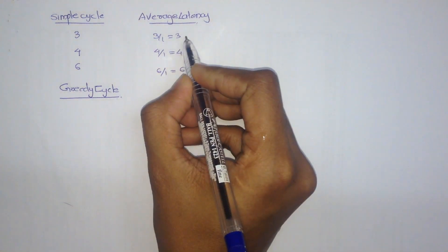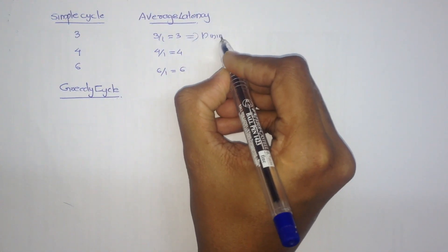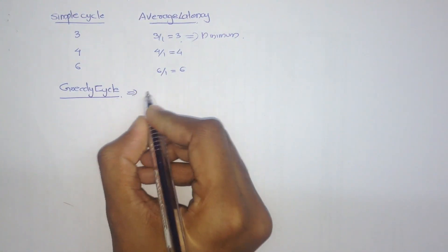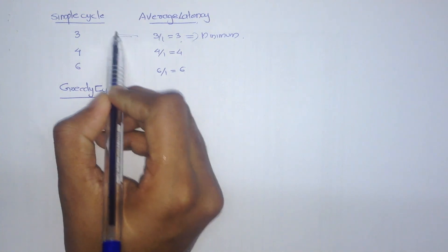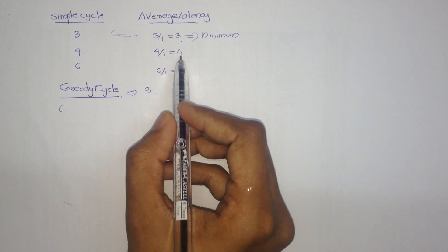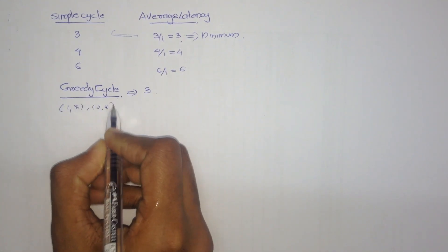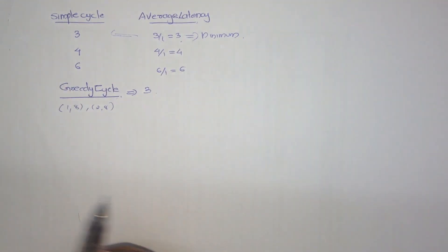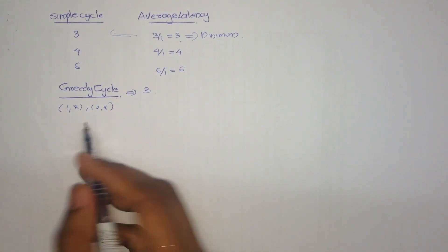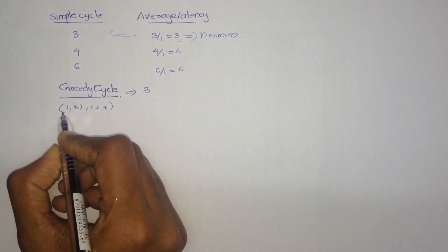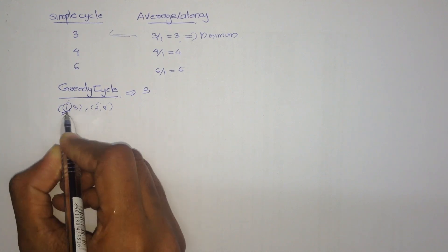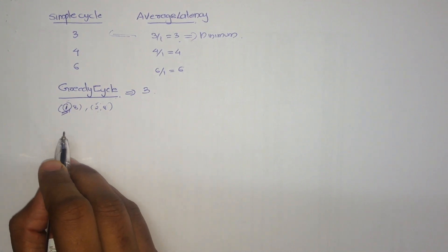Which is minimum here? It is 3, the minimum one. Hence, we consider the value 3 and its corresponding symbol cycle. Now, suppose sometimes values like 1/8 or 2/8 appear in the symbol cycle. At that time, how will we consider the minimum one? We have to consider which has the minimum edge — here it is 2 and here it is 1, so the minimum is 1. Hence, we consider it that way.